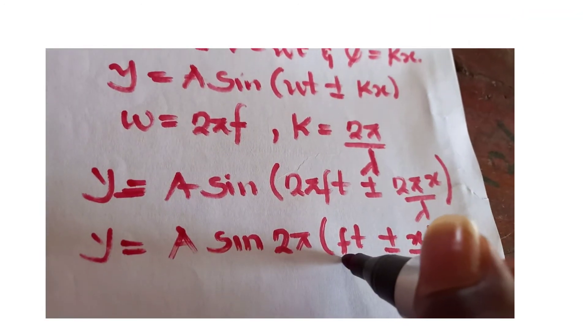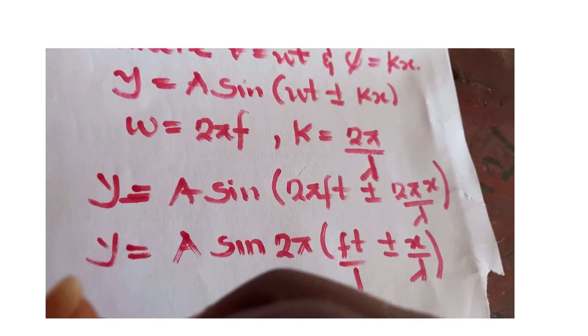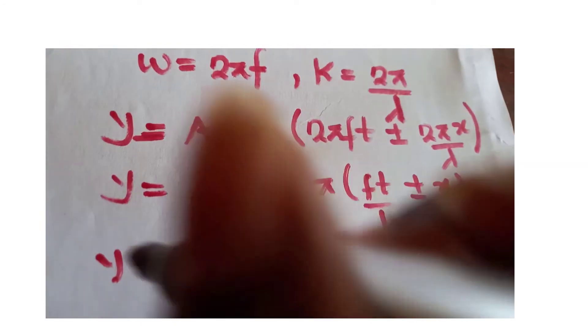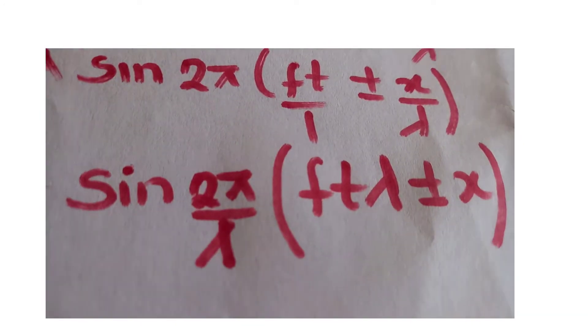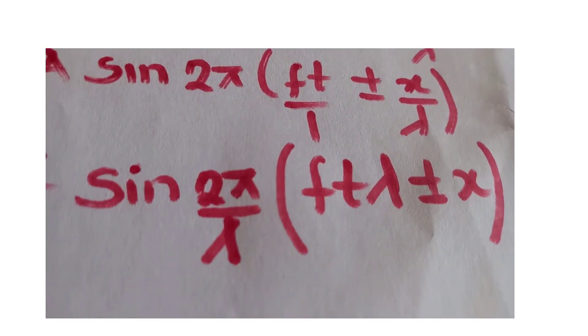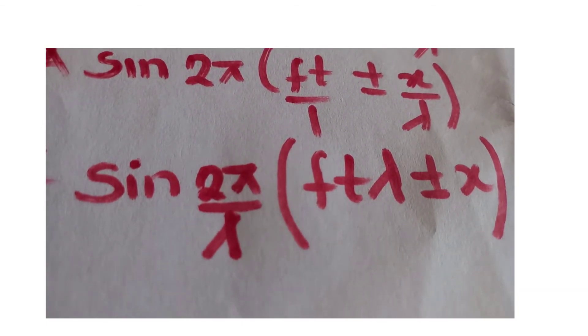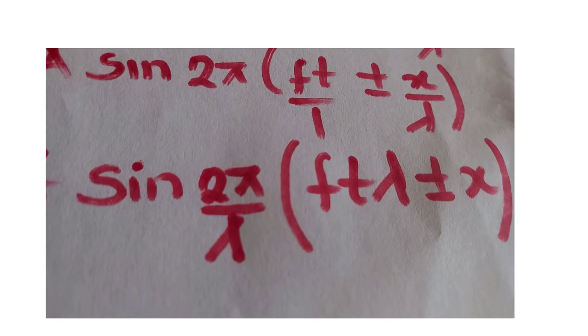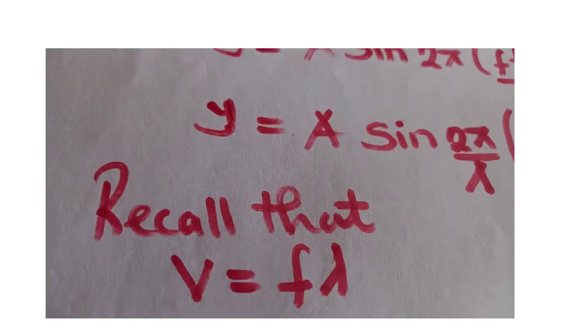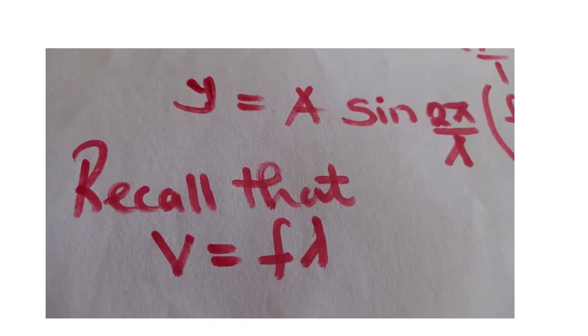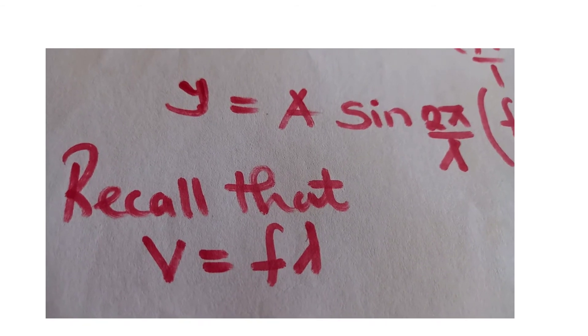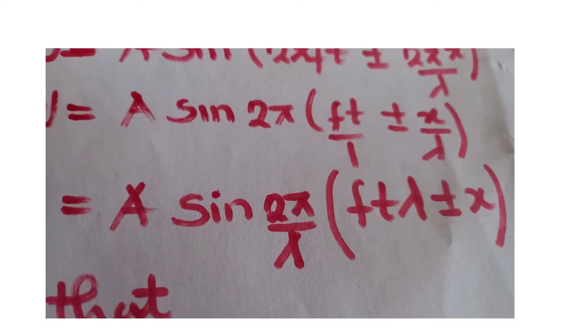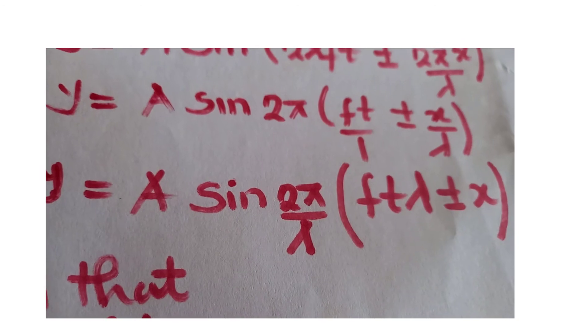So from here we can find the LCM. After looking for the LCM, this is what we are going to get. We have ftλ plus or minus x. We know that v is fλ, so from this equation.